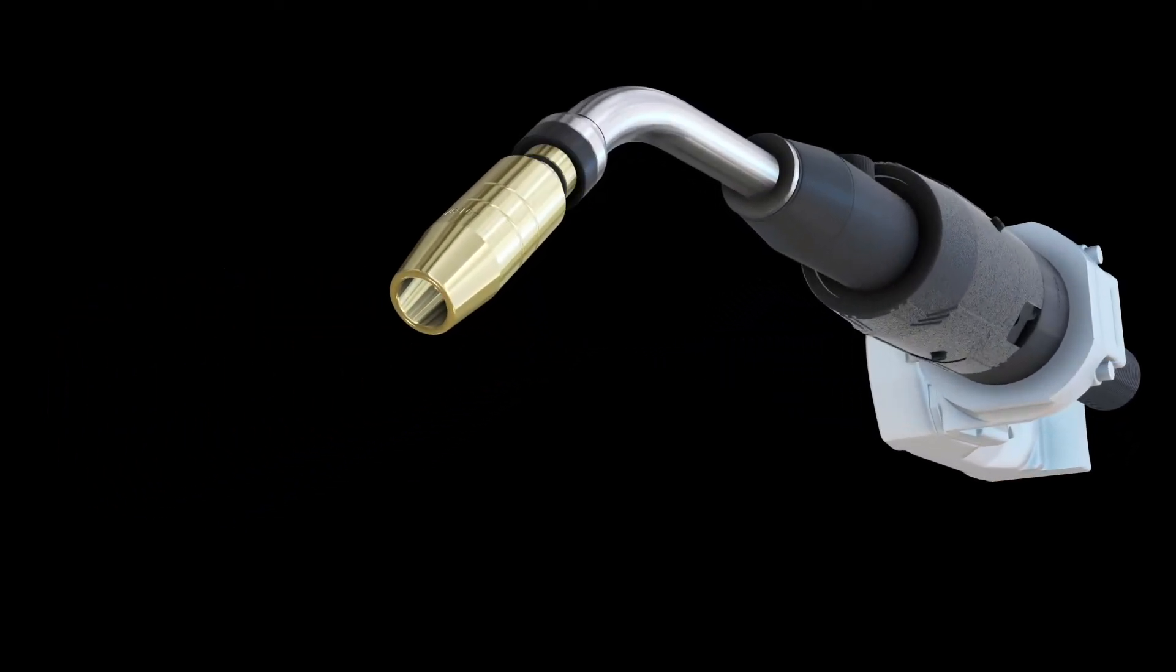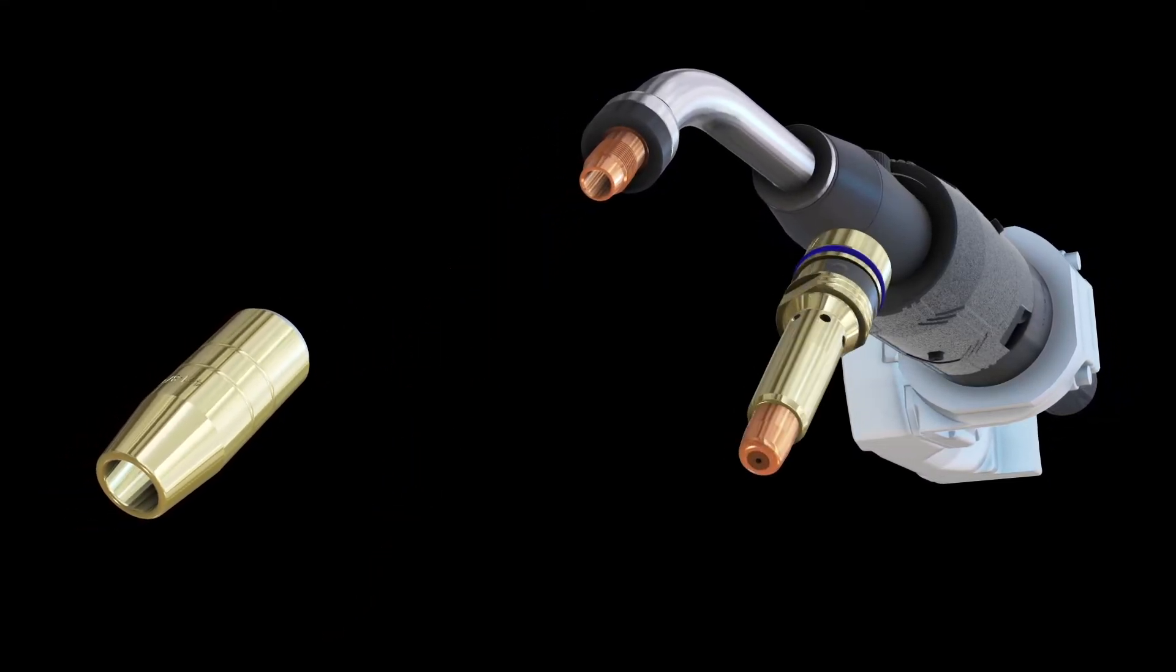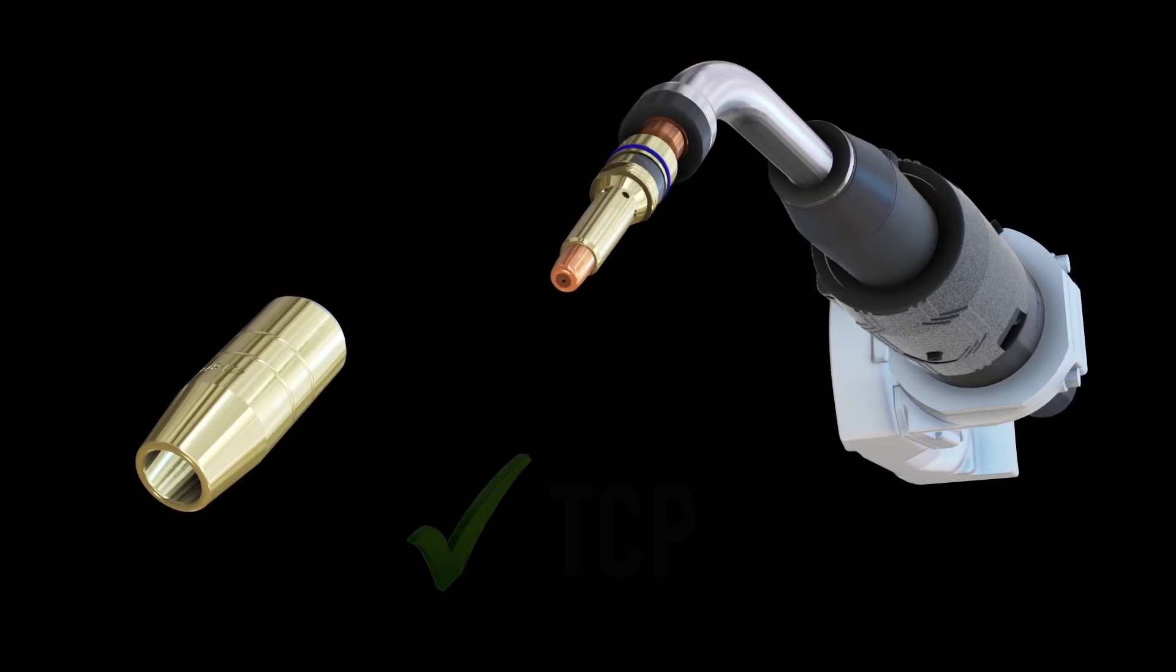You can directly substitute the new contact tip and diffuser for TuffLock consumables in your robotic cells today with no effect on tool center point or TCP.